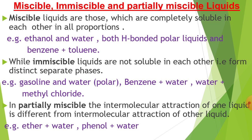Now, some more terms: miscible, immiscible, and partially miscible liquids. Miscible liquids are those which are completely soluble in each other in all proportions. The common example is ethanol and water — as both contain hydrogen bonding, they are soluble in each other in all proportions. One more example: benzene plus toluene — both are non-polar solvents, so they dissolve in each other in all proportions. These types of liquids are called miscible liquids.